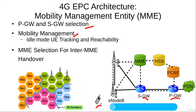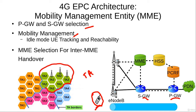Another important function of the MME is mobility management. When a UE is powered on, it can be in either of two states: idle or connected — for example, connected to the network during a call. When the UE is idle, its location is known to the MME at the level of the tracking area. The serving area of a 4G network is divided into tracking areas, which are non-overlapping groups of cells — for example, some cells are assigned to one tracking area and others to another.